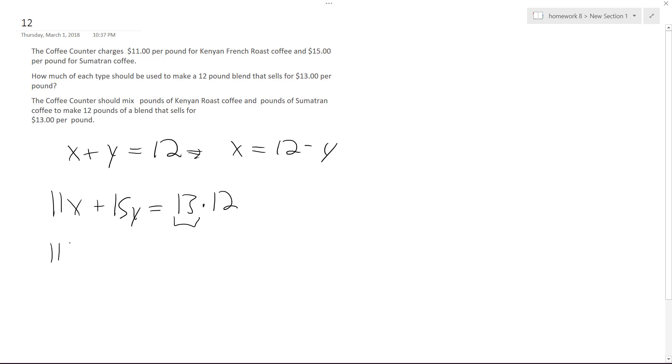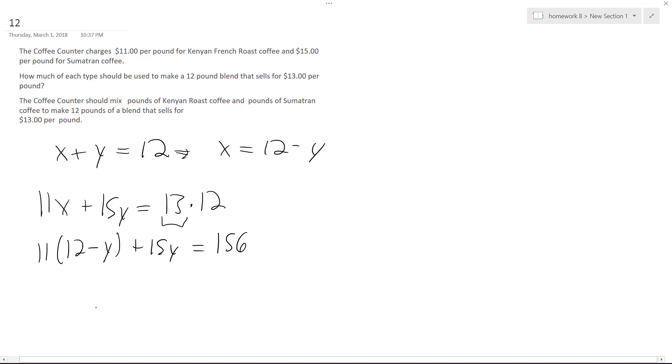So 11 times (12 minus Y) plus 15Y equals 156. We get 132 minus 11Y plus 15Y equals 156. Minus 132, we get 4Y equals 24. Divide by 4, Y equals 6.